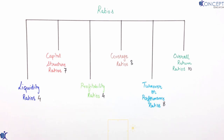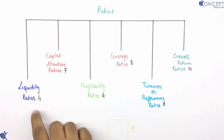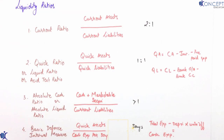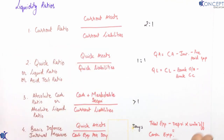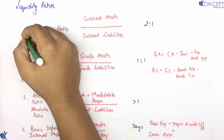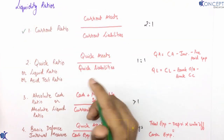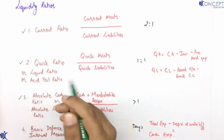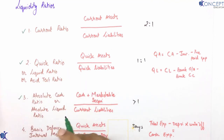In this video we are going to focus on liquidity ratios. There are 4 liquidity ratios from our book's point of view: the first one is current ratio, the second one is quick ratio, the third one is absolute cash ratio, and the fourth one is basic defense interval measure.